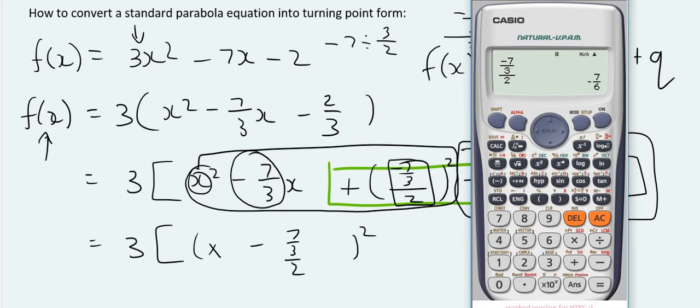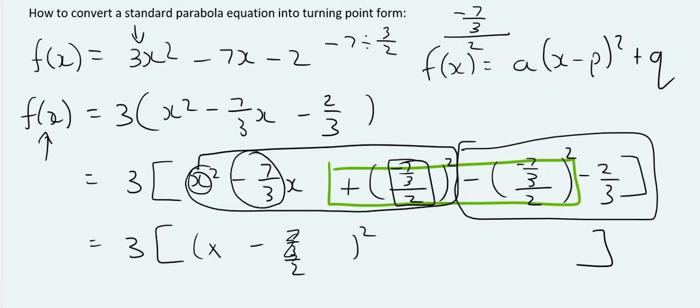And it should give us minus 7 over 6. Okay, so this whole part here we can write as minus 7 over 6. Like that. And then, once again, we should go put all of this in on the calculator.